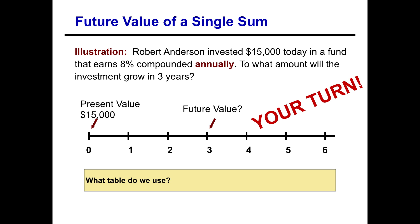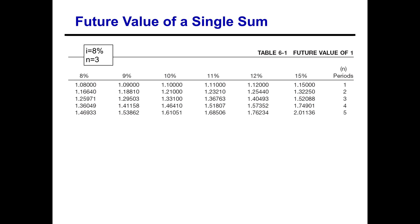We go to our future value of a lump sum table. It's compounded annually over three years, so one times three years gives us three periods, at eight percent. We look for 8% and go down to three periods. That gives us a factor of 1.25971. Your table may differ by one or two digits — that's just rounding.